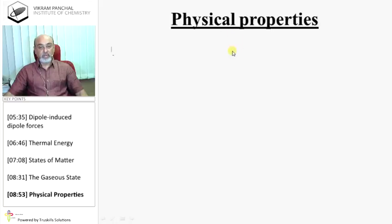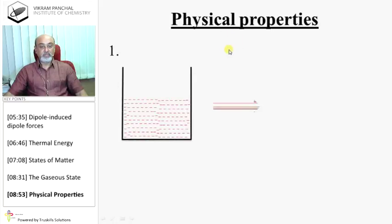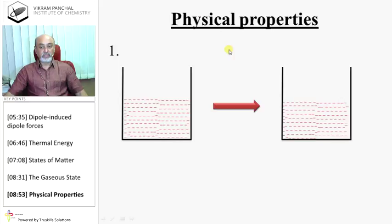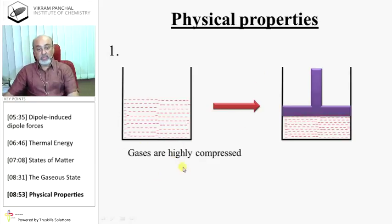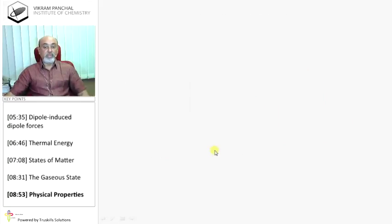Physical properties: if you apply pressure on gaseous state, then volume changes. That means there is an effect of pressure on gases. So we can say that gases are highly compressible. You can compress the gas, you can change volume, by applying pressure.